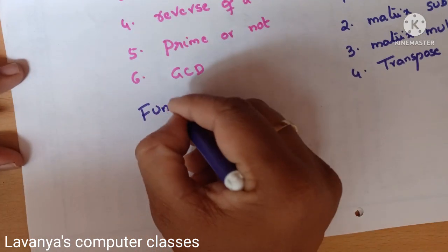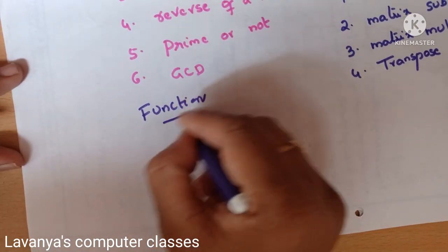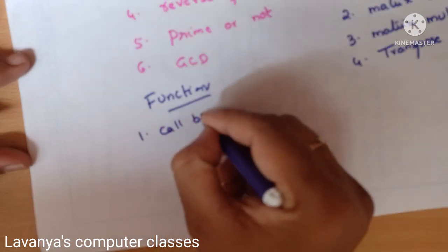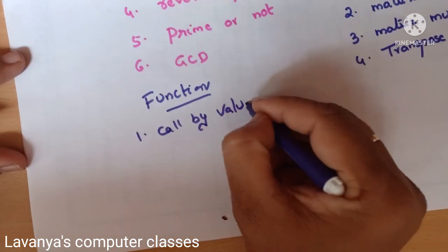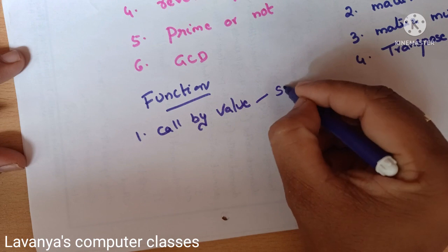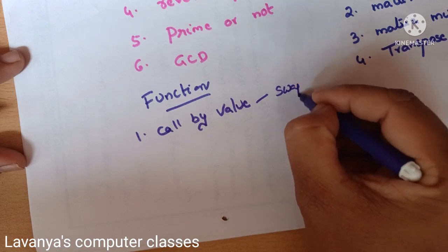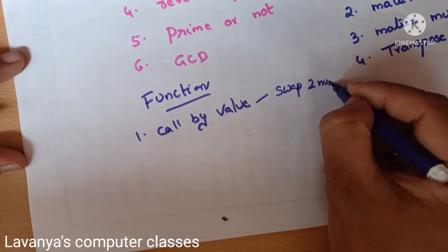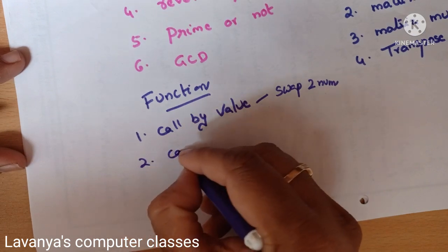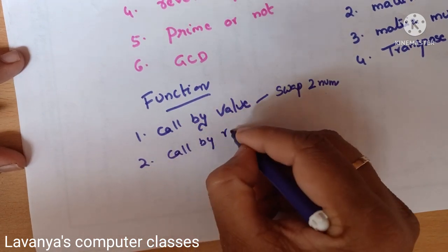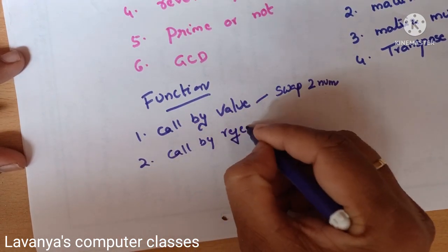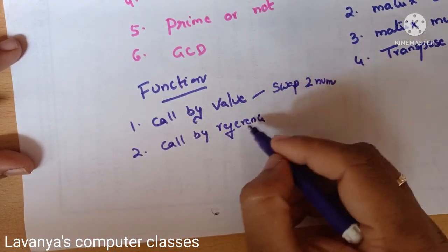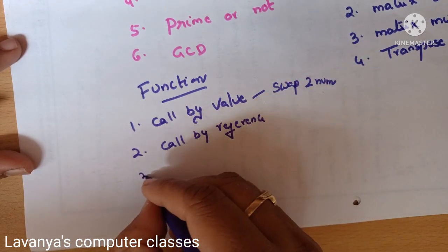Next is the functions concept. In function concepts, for call by value, the most important program is swapping of two numbers — exchange of two numbers. The same program is also written using call by reference. So one example for call by value and one example for call by reference are very, very important.